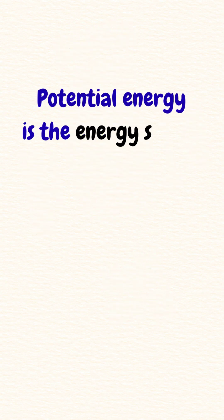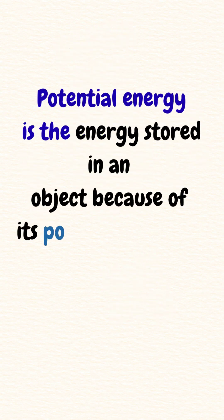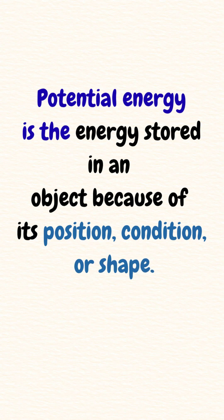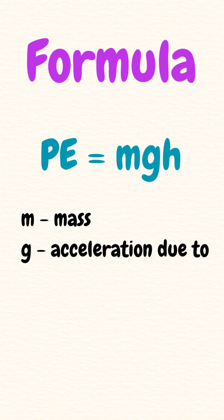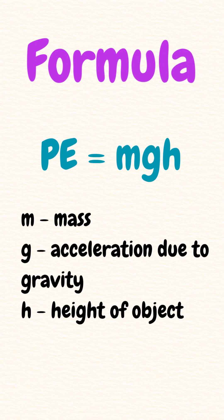Potential energy is the energy stored in an object because of its position, condition, or shape. The formula for potential energy is PE = mgh, where m is the mass of the object, g is acceleration due to gravity, and h is height.